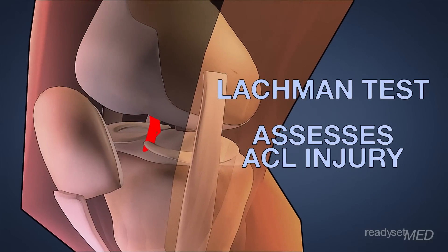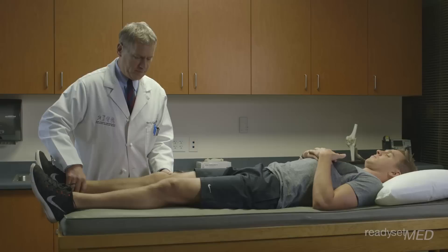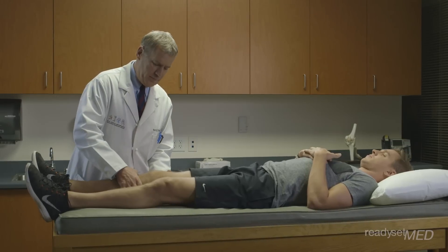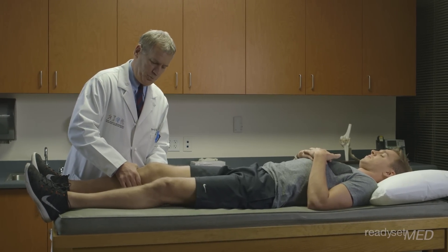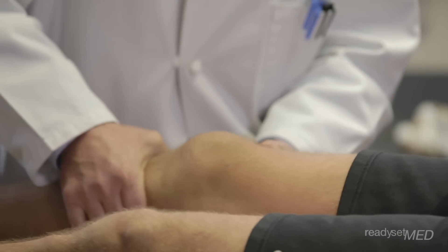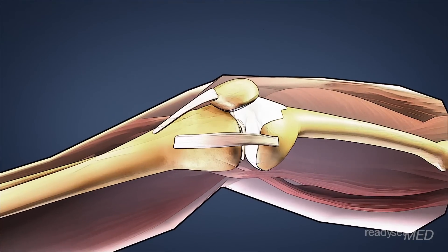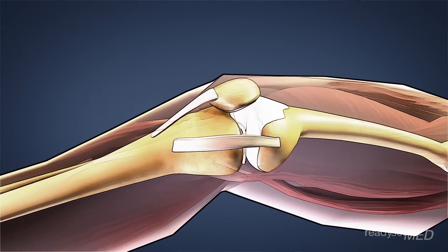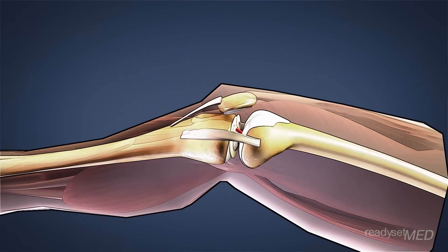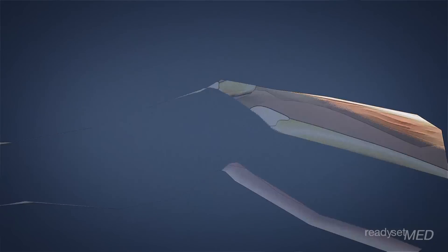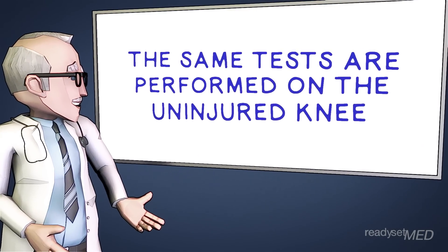Now let's move on to some more specific physical exam tests to assess a possible injury to the ACL. The Lachman test is performed with the knee flexed about 30 degrees. Your doctor will stabilize the femur with one hand and pull forward on the tibia with the other. If the ACL is intact, there should be a firm endpoint, as the ligament will prevent the tibia from subluxing forward. A soft or absent endpoint can indicate a torn ACL.